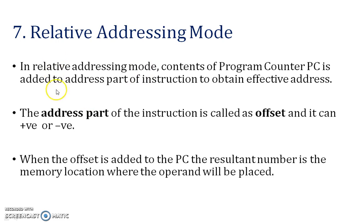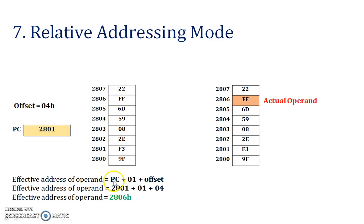Next — relative addressing mode. Relative addressing mode is mostly based on an address part and an offset. The equation to find the effective address is: Effective Address = PC + 01 + offset. Here, the program counter is 2801, plus 01, and the offset value is 04, so 2801 + 01 + 04 = 2806. Therefore 2806 is our effective address, and from 2806 we find the actual operand value, which is FF.